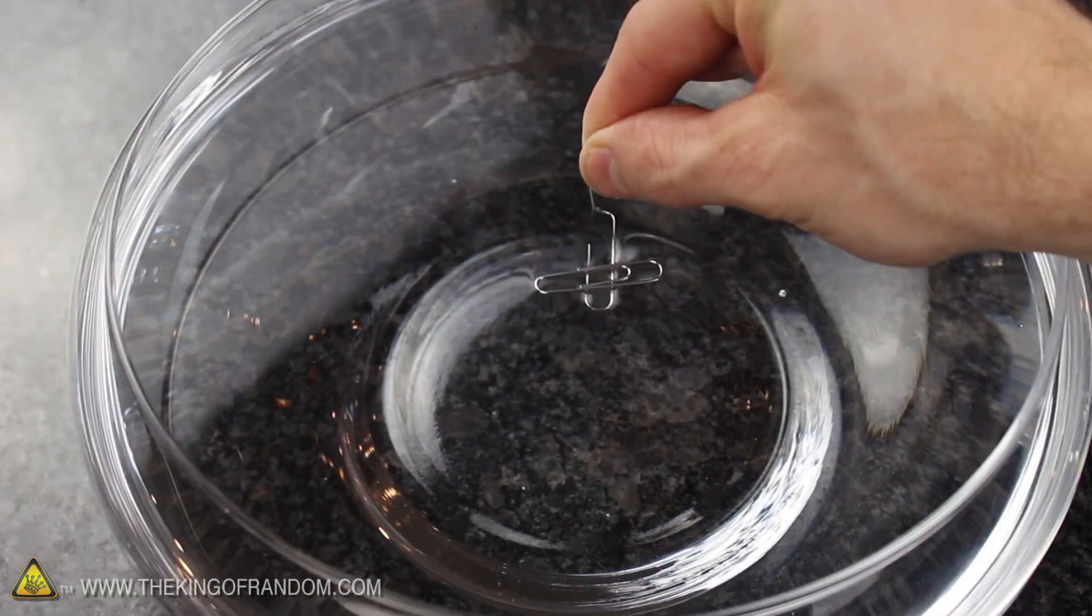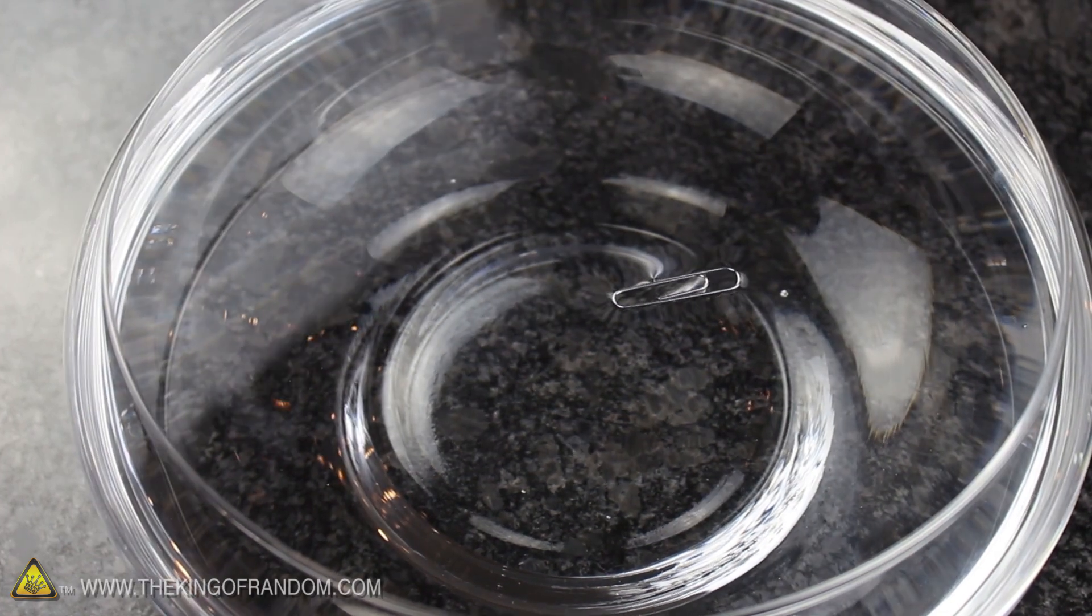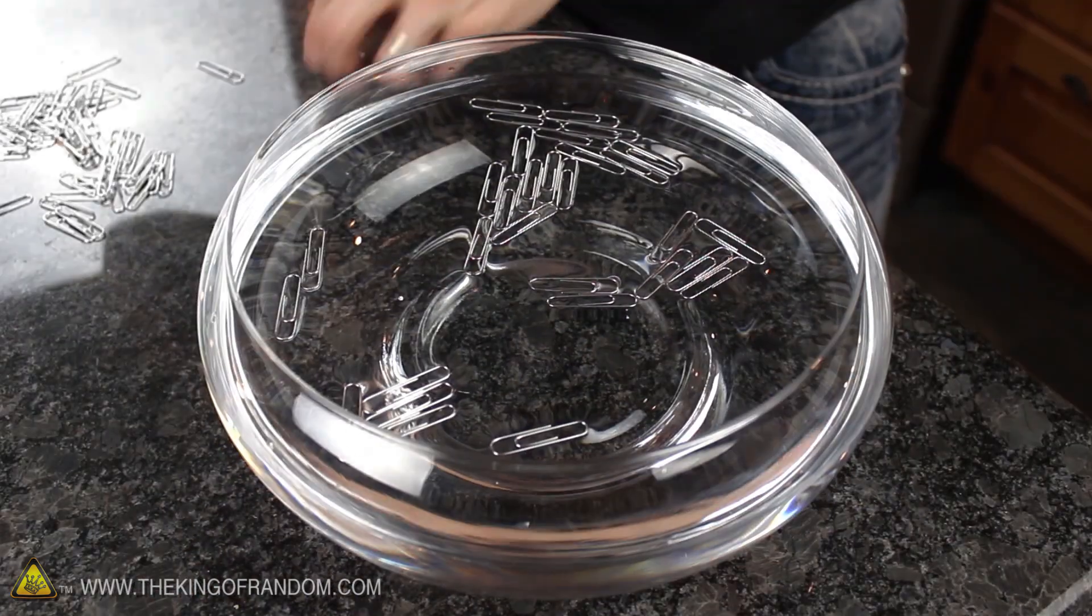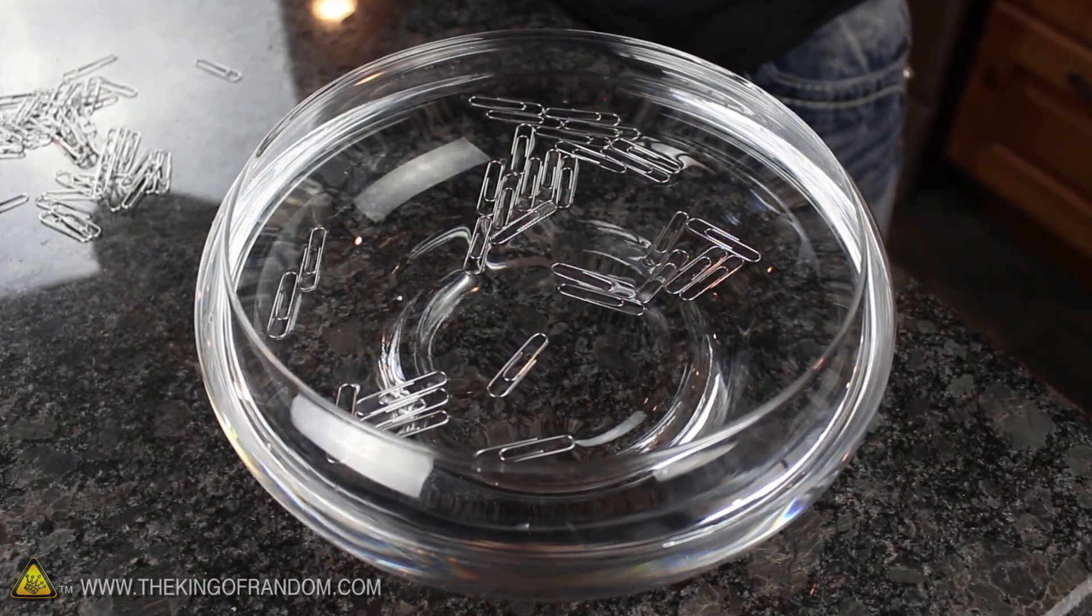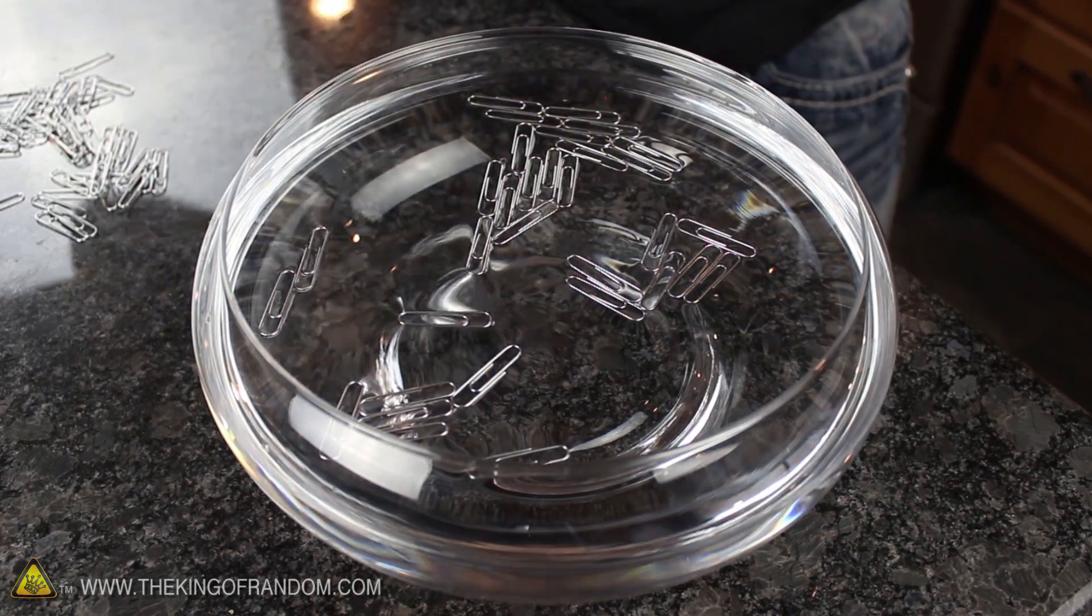Use the same paper clip trick from before to quickly and easily set your metal bits floating on their own. And if you're careful and have a large enough dish, you might even be able to get the entire box of paper clips floating at once.